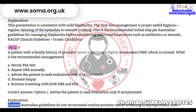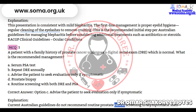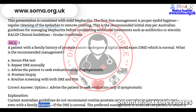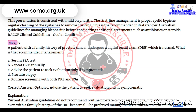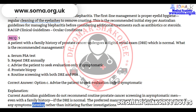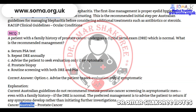Correct answer: Option C — Advise the patient to seek evaluation only if symptomatic. Explanation: Current Australian guidelines do not recommend routine prostate cancer screening in asymptomatic men, even with a family history. If the DRE is normal, the preferred management is to advise the patient to return if any symptoms develop, rather than initiating further investigations. Reference: Cancer Australia — Prostate Cancer.